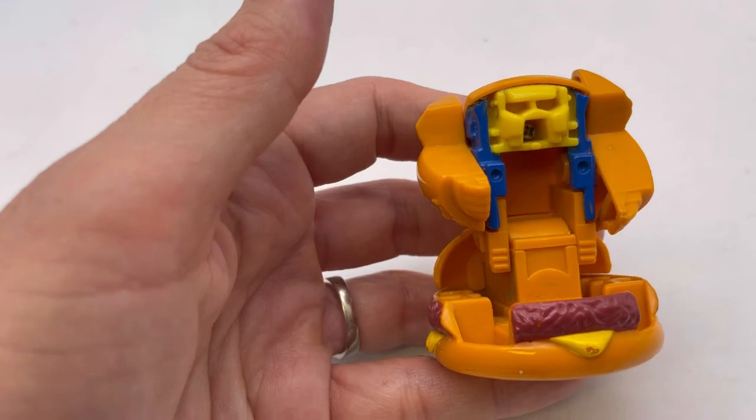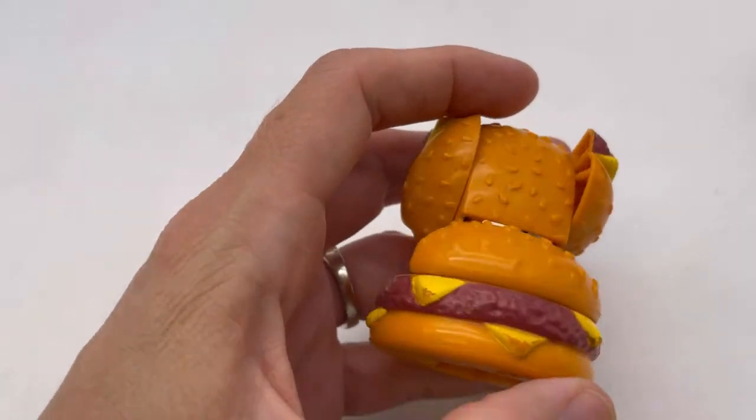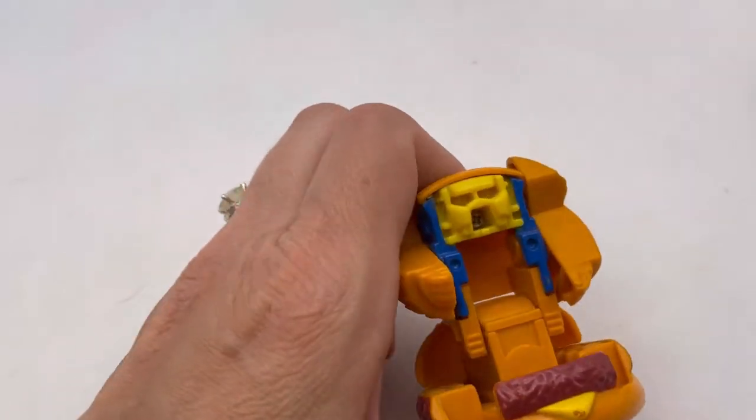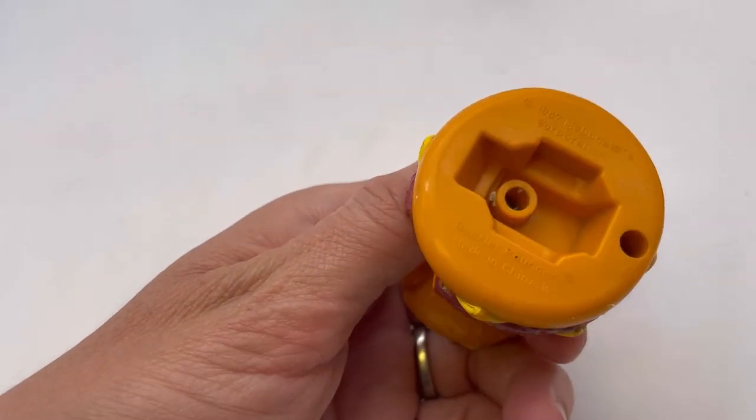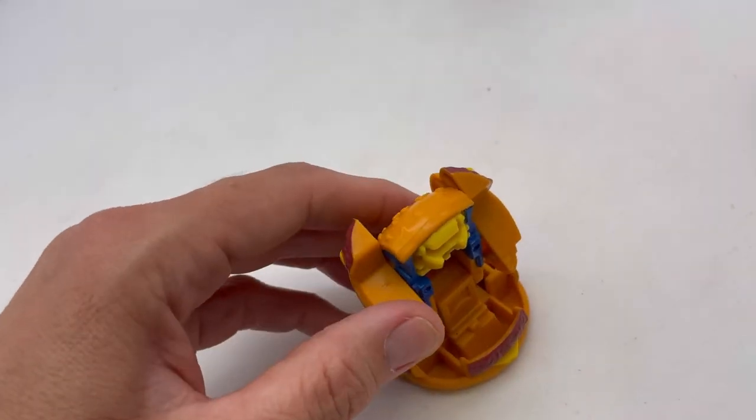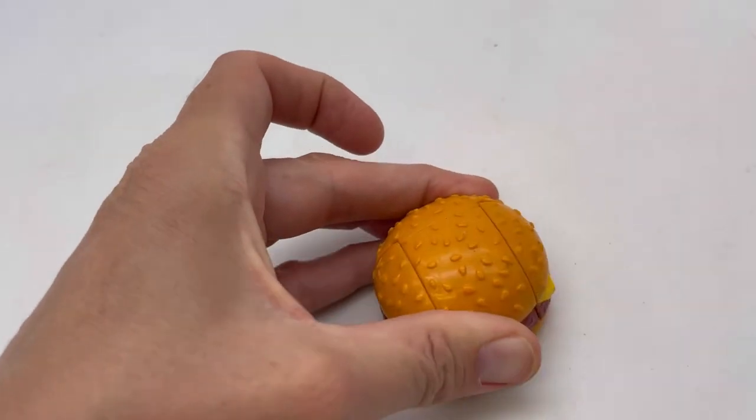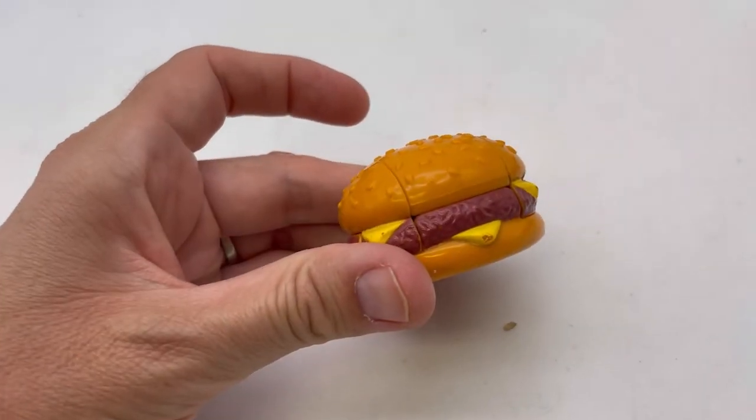Now this guy is a cheeseburger. I did not clean these up, you guys. I just don't have time. So it's a little dirty, but they'll clean up. This one's from 1987. The arms fold down and then it pops down into a cheeseburger.